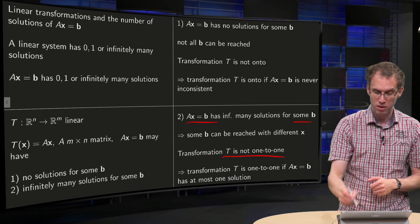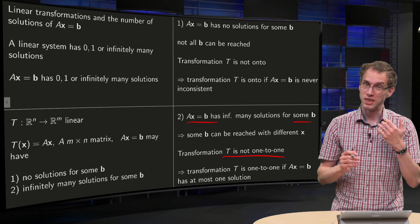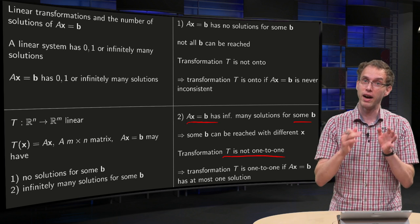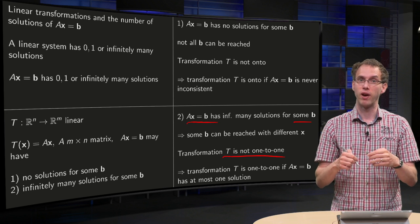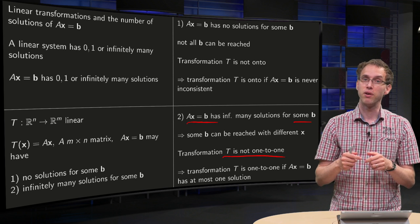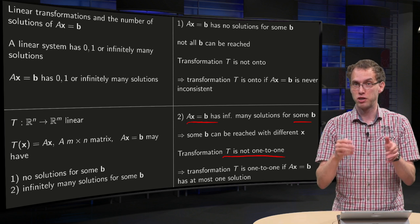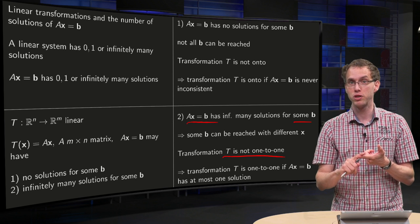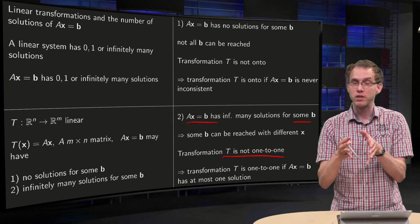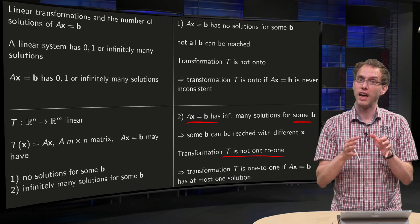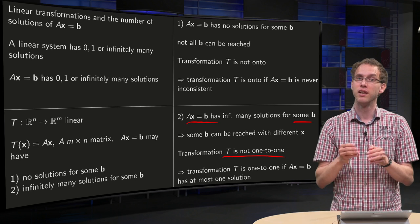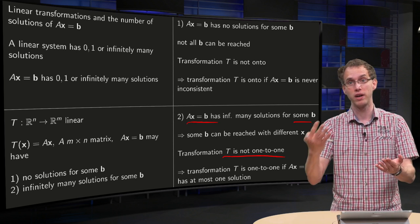So the transformation is 1-to-1 if Ax equals b has at most one solution — either no solutions or one solution. To summarize: a transformation is onto if Ax equals b has either infinitely many or one solution, and t is 1-to-1 if Ax equals b has either zero or one solution. Therefore, if Ax equals b has exactly one solution, the corresponding transformation is both 1-to-1 and onto.